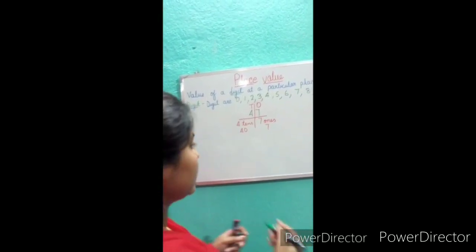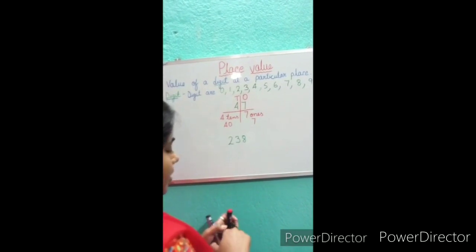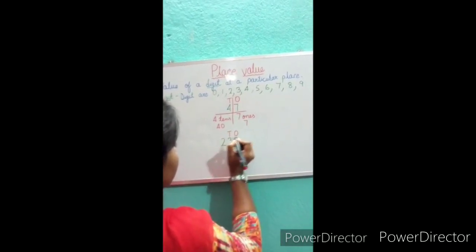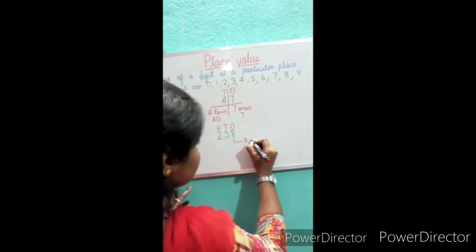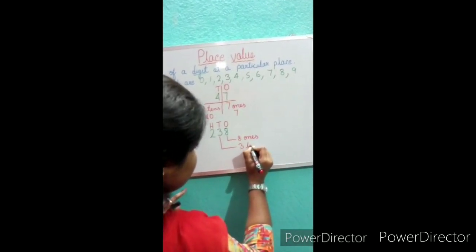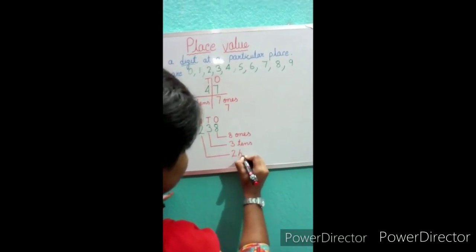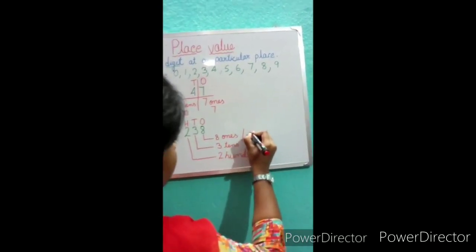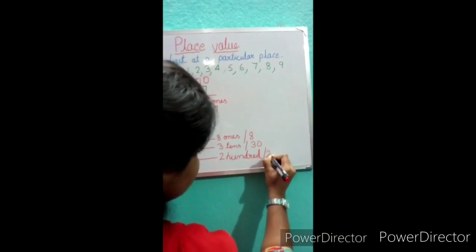Now if I give you a 3 digit number — that is 238 — we will first write the places: hundreds, tens, ones. So we write 8 ones, 3 tens, and 2 hundreds. That gives us: 8 ones as 8, 3 tens as 30, and 2 hundreds as 200.